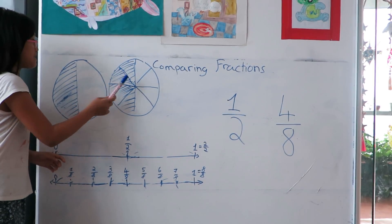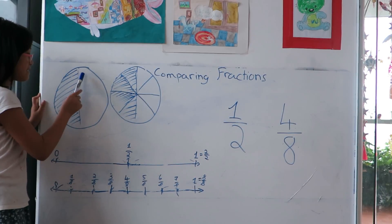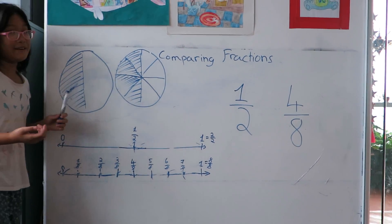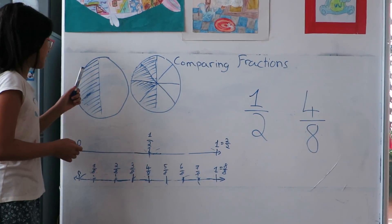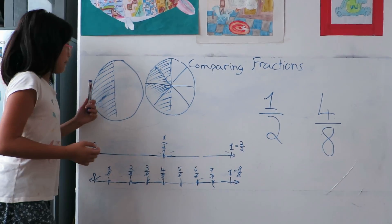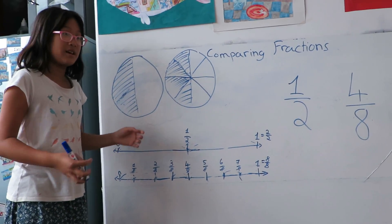Here I have these two cakes. I divide this cake into two equal pieces. What's the fraction for the shaded part? One half. One half is equal to a half.